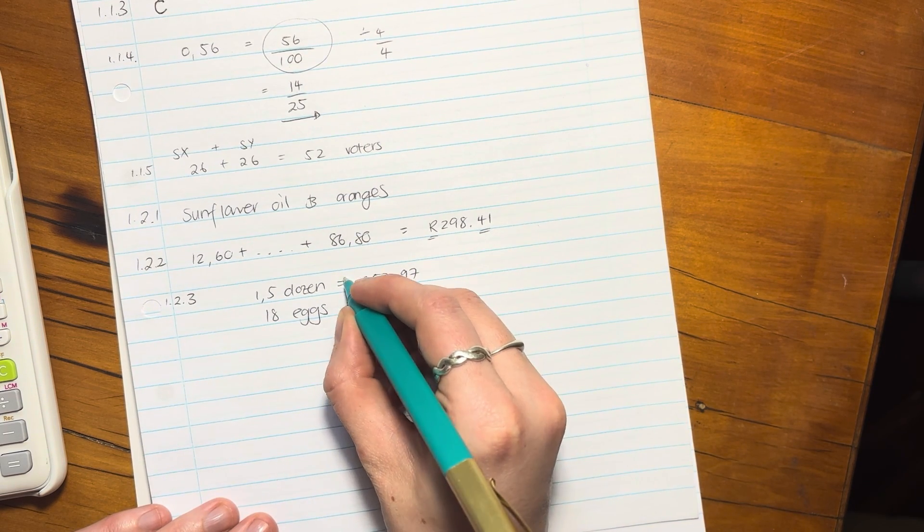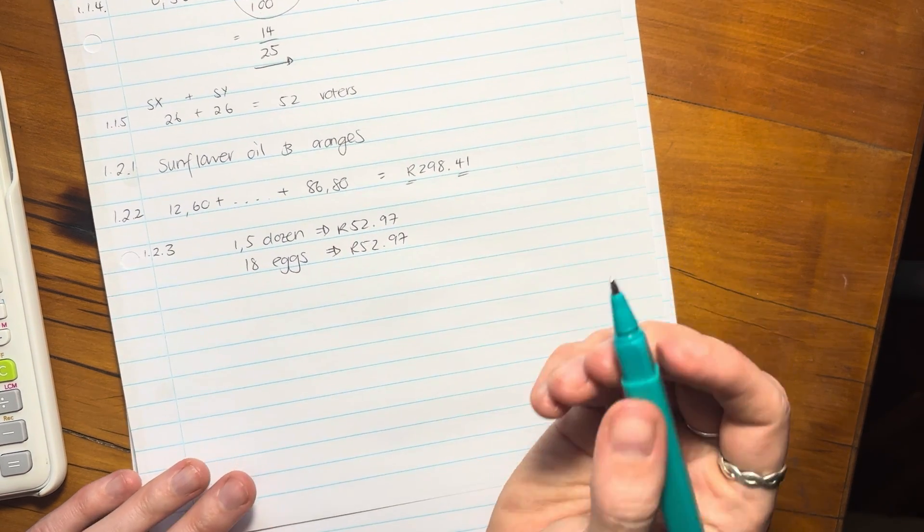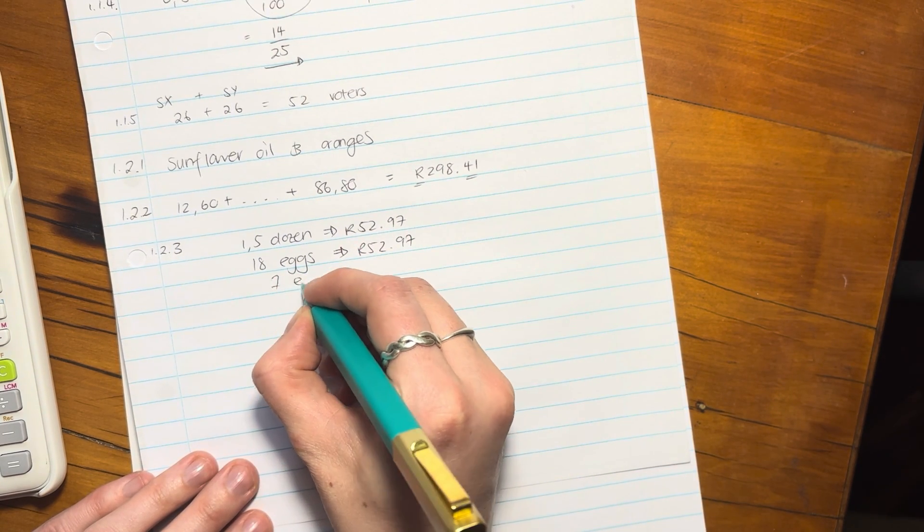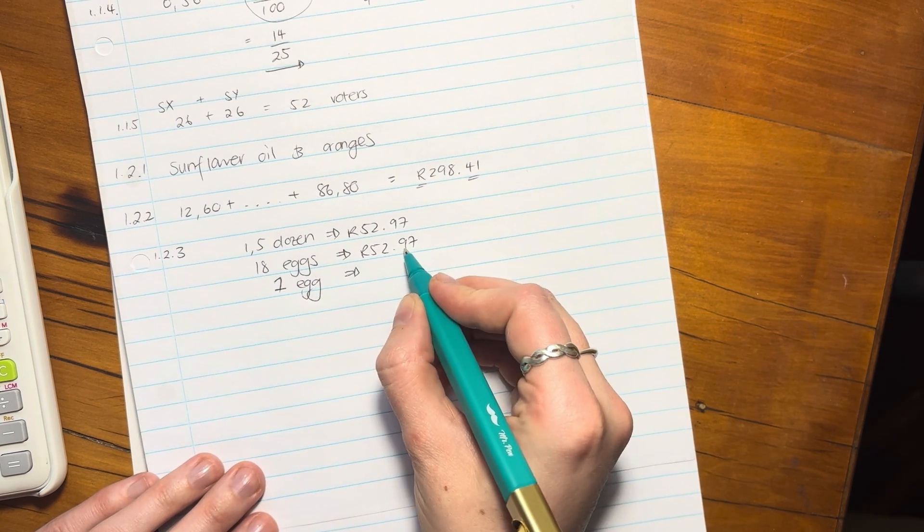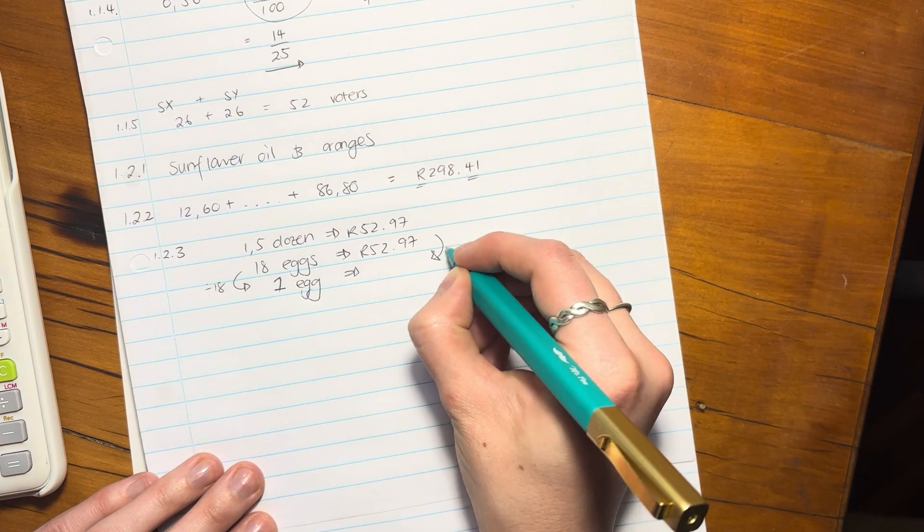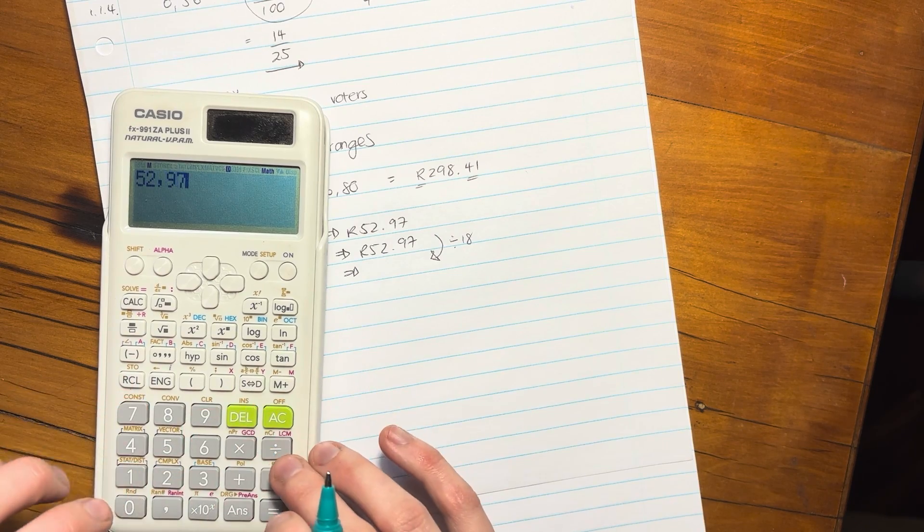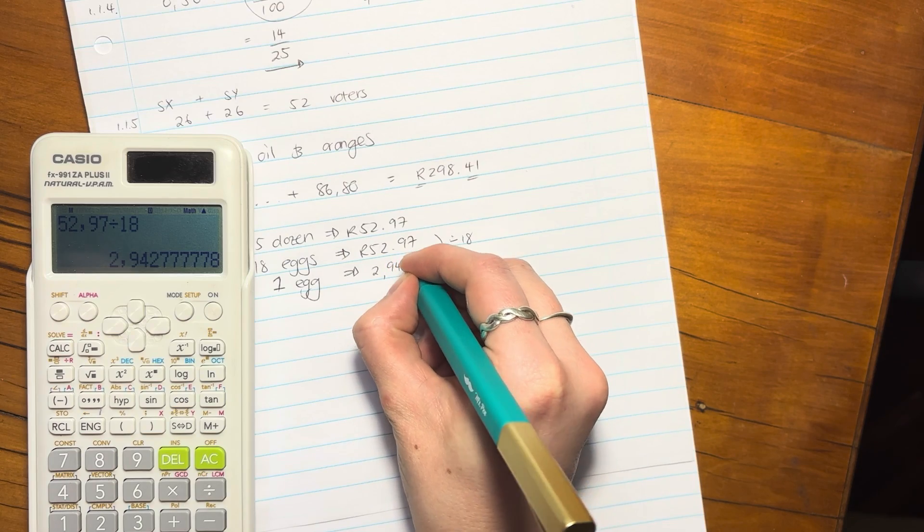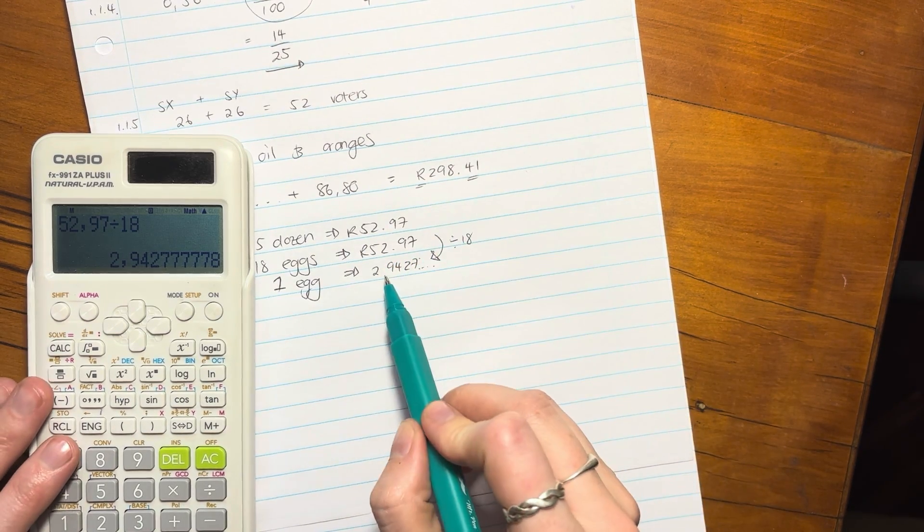So now we want to know how much 12 eggs cost. Well let's actually say, how much does one egg cost? So if 18 eggs equaled that, we divide that side by 18 and we divide that side by 18. So we're just going to say 52.97 divided by 18. That's how much, and I'm not going to round it off. Remember it said only round off your final answer. That's how much one egg costs.